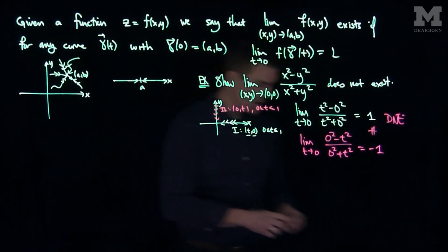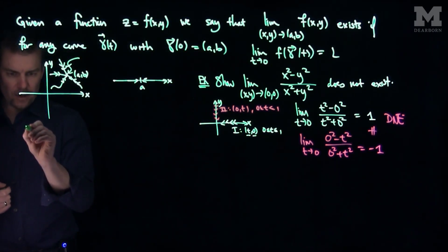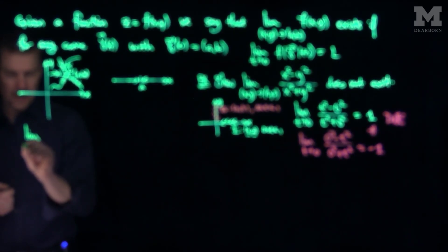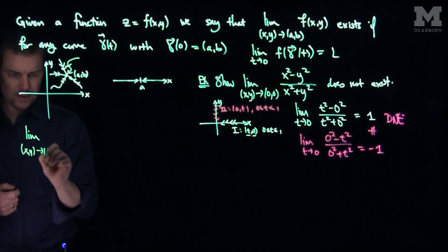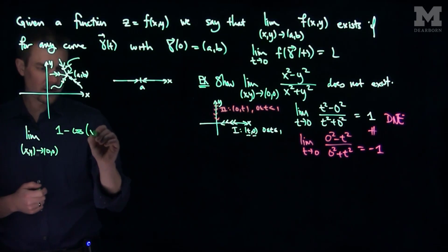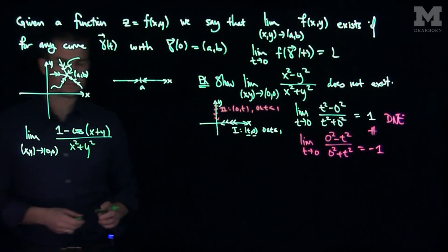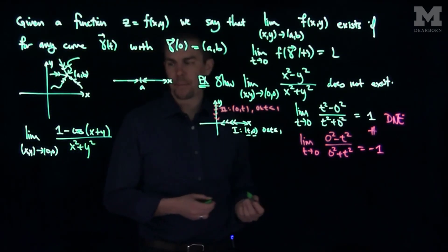Let's look at another example of this, where we might have some things being equal on the x-axis. If I look at the limit as x, y tends to 0, 0, of 1 minus the cosine of x plus y over x-squared plus y-squared,